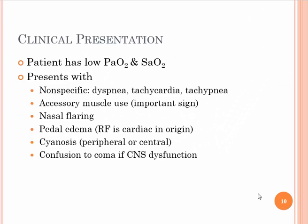How does this patient look? Diagnostically, the patient has low PaO2 and low saturation. What the patient looks like clinically: very nonspecific dyspnea, tachycardia, and tachypnea — the typical symptoms of any respiratory problem. Accessory muscle use, nasal flaring, pedal edema if respiratory failure is cardiac in origin. Cyanosis — peripheral or central — and confusion to coma if the CNS is involved.